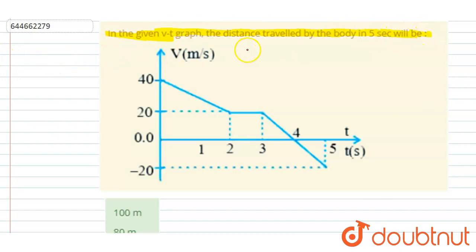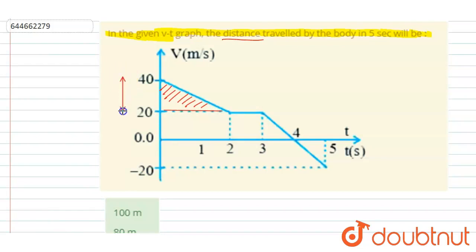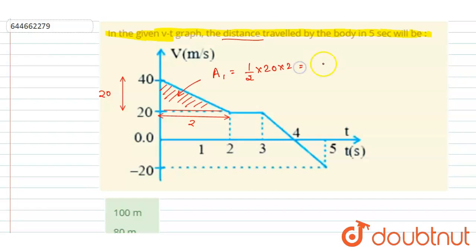Distance is asked in this question, so distance can't be negative. We'll calculate the area under the curve and make any negative area positive as well. This first region is a triangle — the height is 20 and the base length is 2, so area A1 equals half into 20 into 2, which equals 20.